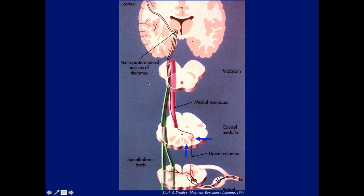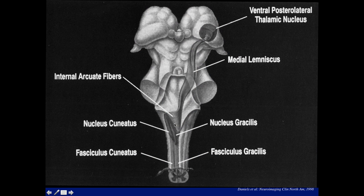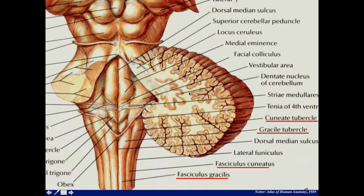This is a rough picture of the course of the fibers — diagrammatic, showing that the fasciculus cuneatus and gracilis merge together with the lateral spinothalamic tract and end up in the medial lemniscus, which ends in the thalamus.